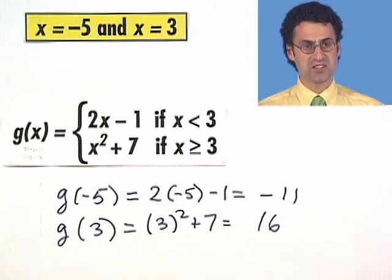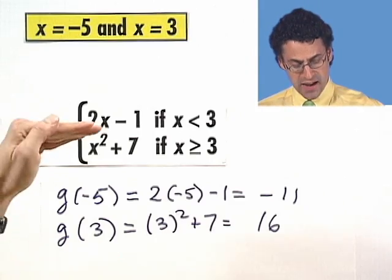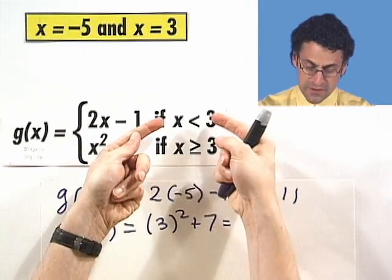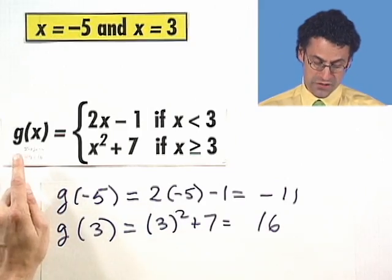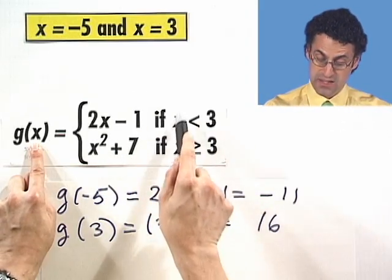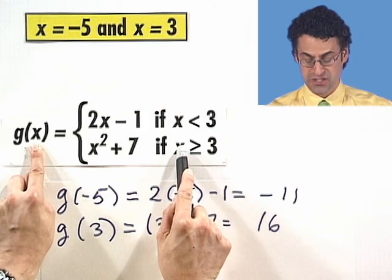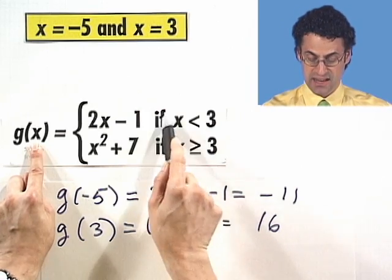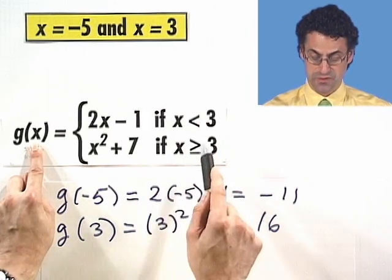So you can see that a piecewise defined function is defined to be different things on different pieces, different allowable values for x. So it's important when you see this kind of thing to realize that you just don't plug in into x. You've got to find out what is the right place to plug in. Ask yourself, does my x satisfy this? Does it satisfy that? Once you figure that out, that's the function you use for that piece. That's why it's called piecewise defined functions. Neat.